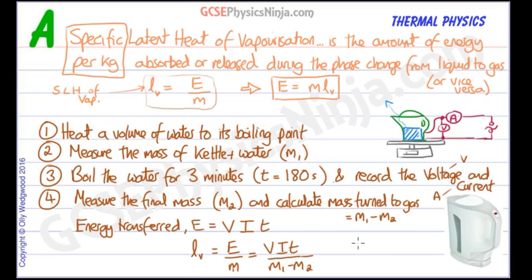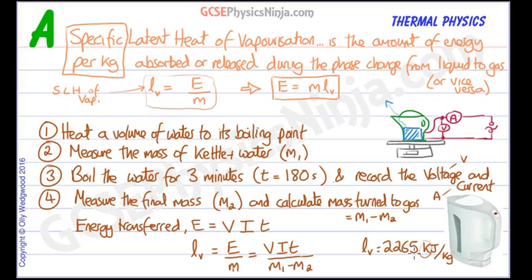You should get a value of approximately 2265 kilojoules per kilogram. Note that the raw calculated value will be in joules, so divide by 1000 to convert to kilojoules. That means about 2,265,000 joules are needed to convert each kilogram of water from liquid into gas — quite a lot of energy to break all those intermolecular bonds.